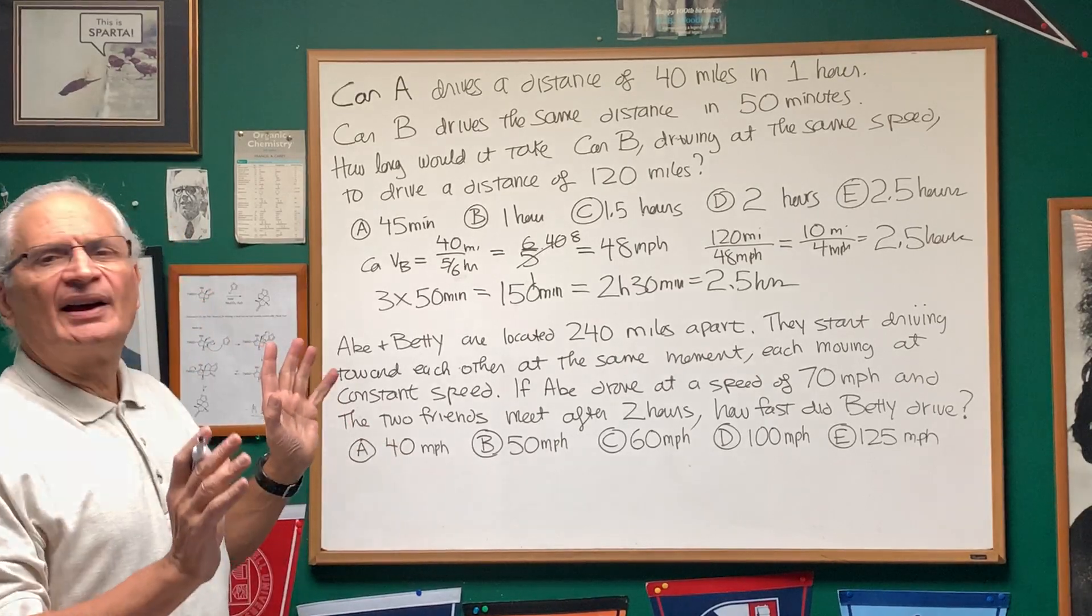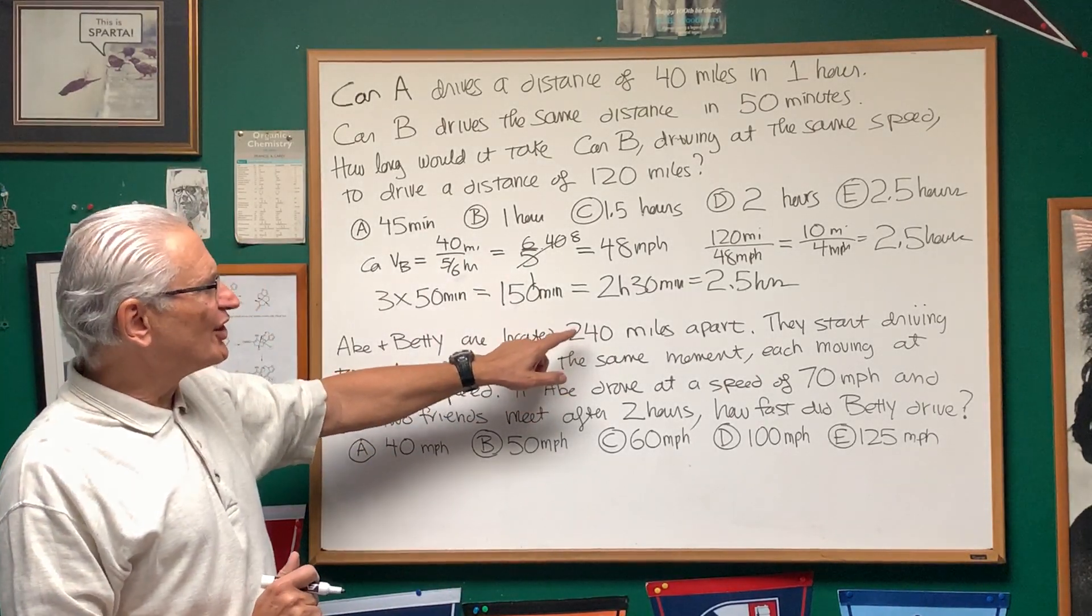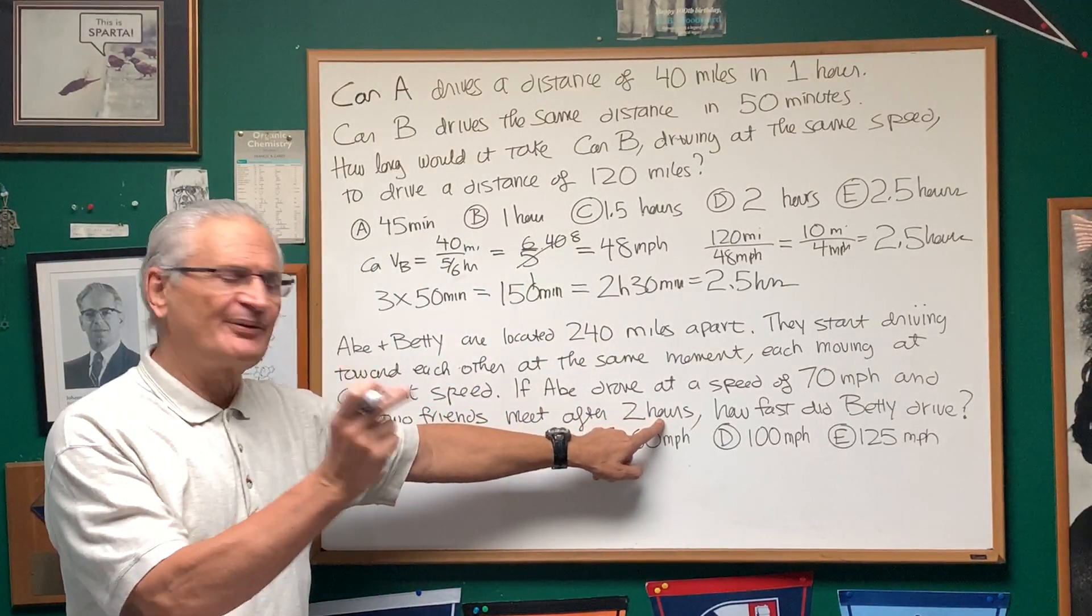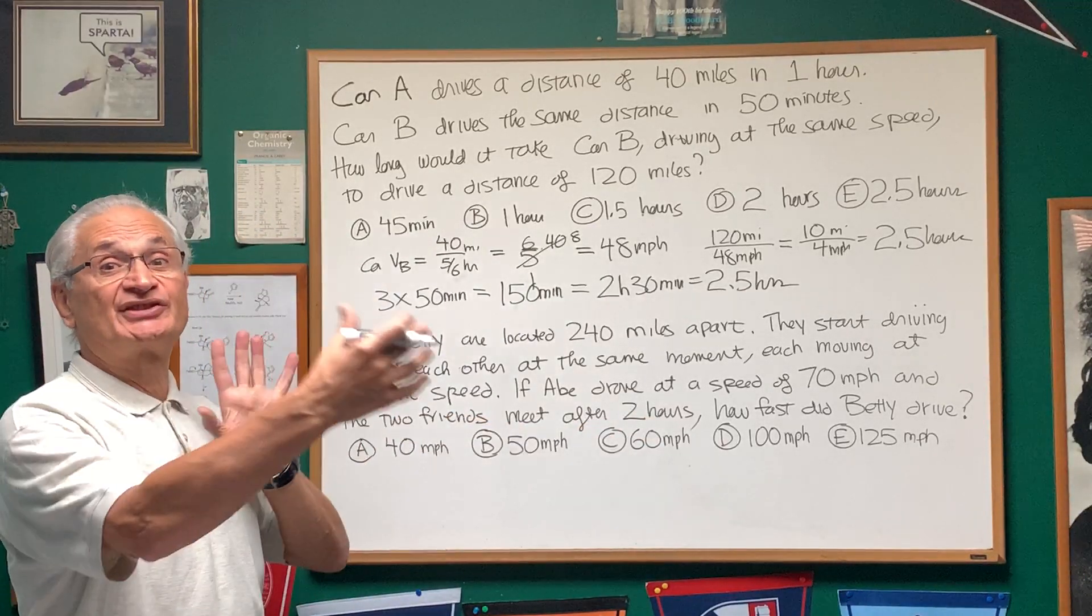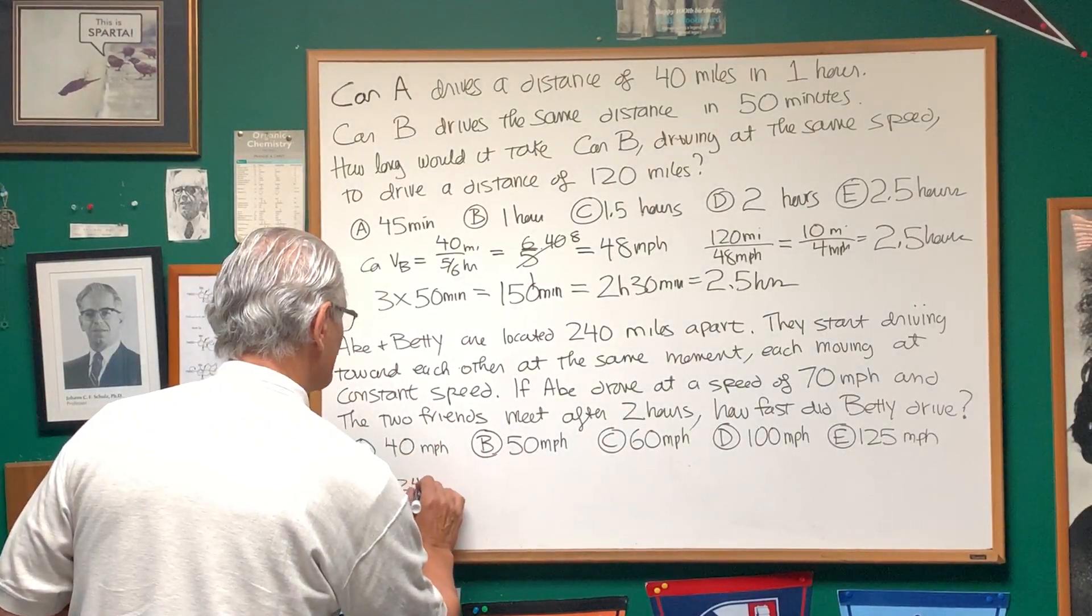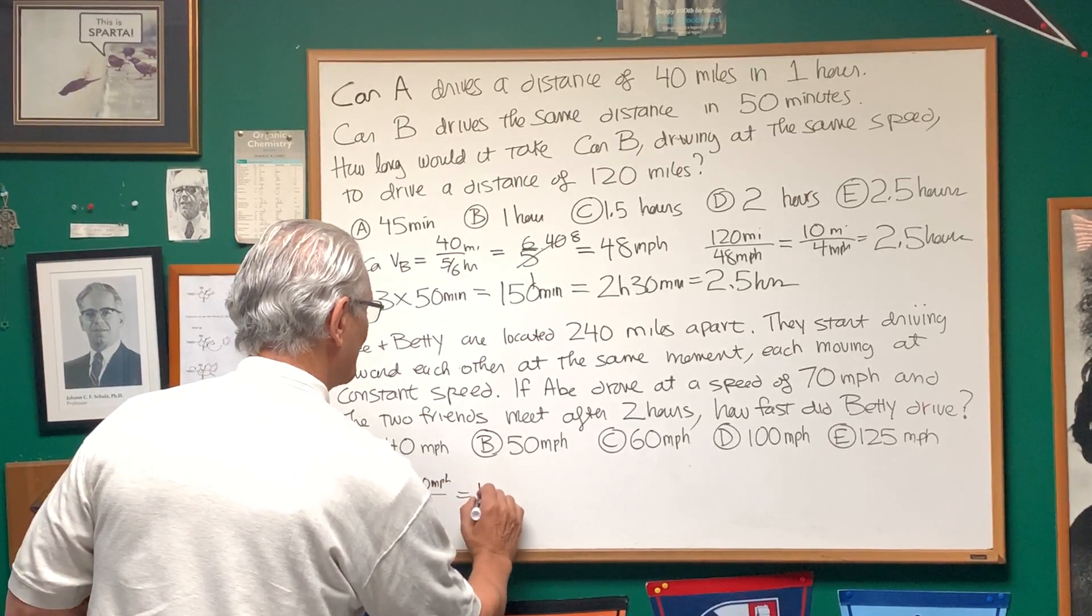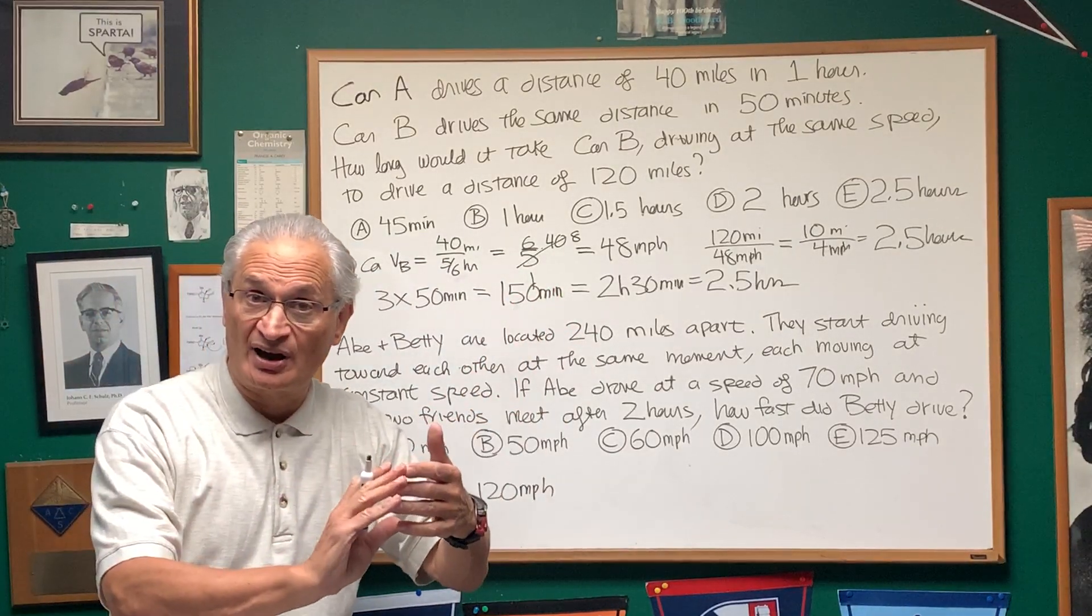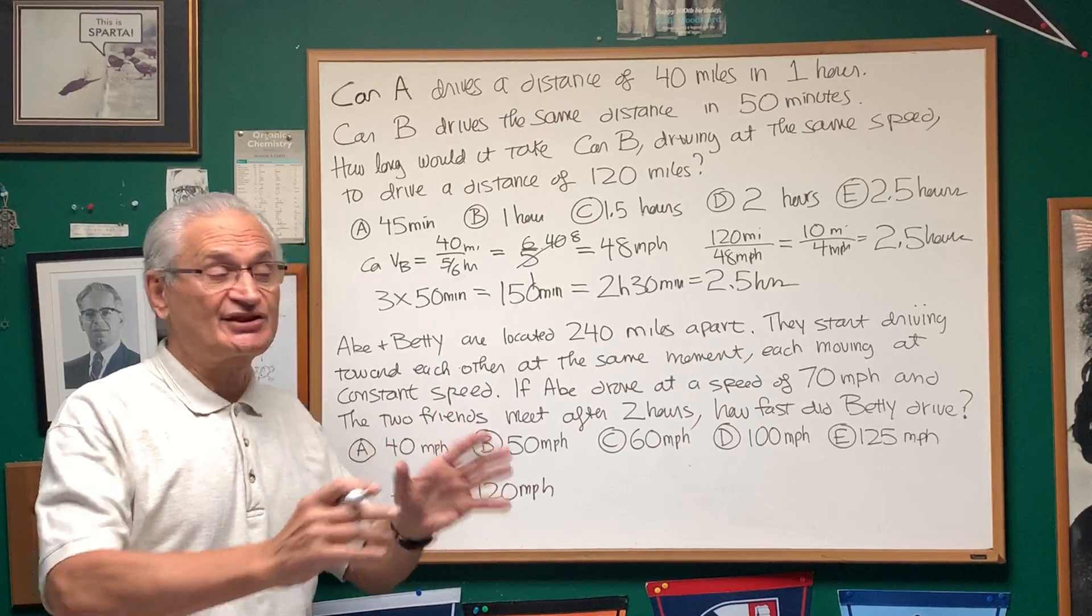The easiest way to approach this is to see that they're 240 miles apart, they use up that distance in only 2 hours, so that means the distance between them is shrinking at a rate of 240 miles divided by 2. The distance between them is shrinking at a rate of 120 miles an hour. Well, that's going to represent the sum of the two velocities.